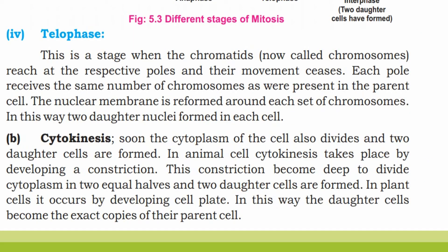This is the stage when the chromatids are now called chromosomes. They reach their respective poles and their movement ceases. Each pole receives the same number of chromosomes as were present in the parent cell.